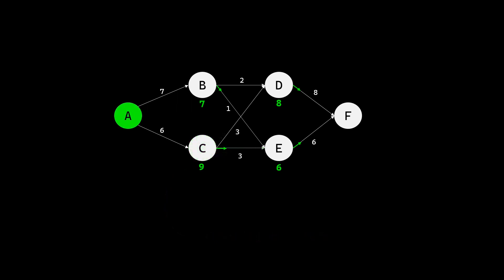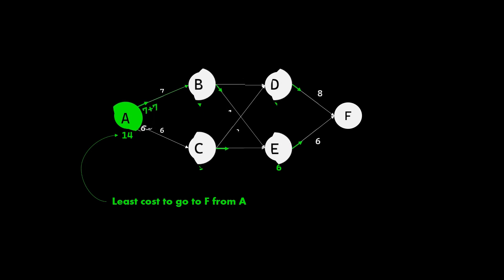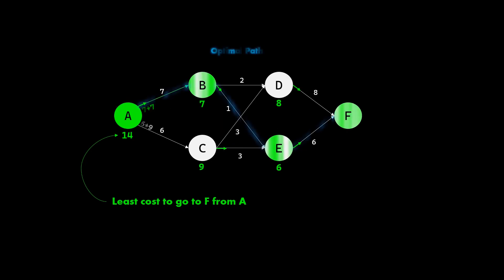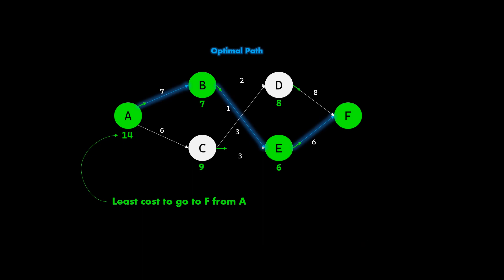Again moving to the prior stage, there is the initial state A. The optimum way forward is towards B, with the least cost of 7 plus 7, which is 14. Now that we have calculated the least cost from each state to the destination F, we can trace the most optimum path starting from initial state A. All we have to do is follow the little green arrows we had marked in the previous steps. These arrows guide us on the optimum path. Voila! We have now determined the most optimal path from A to F. This algorithm is very generic and can be used to solve a variety of optimization problems.